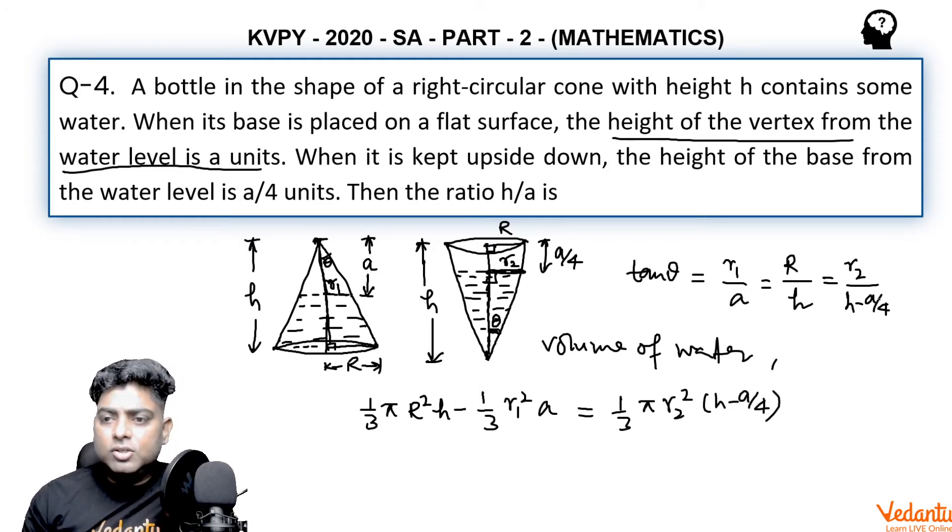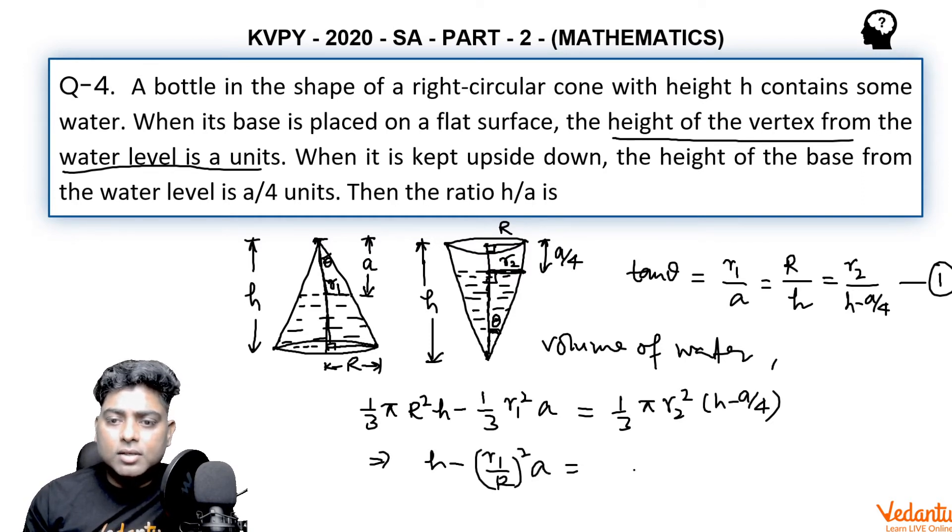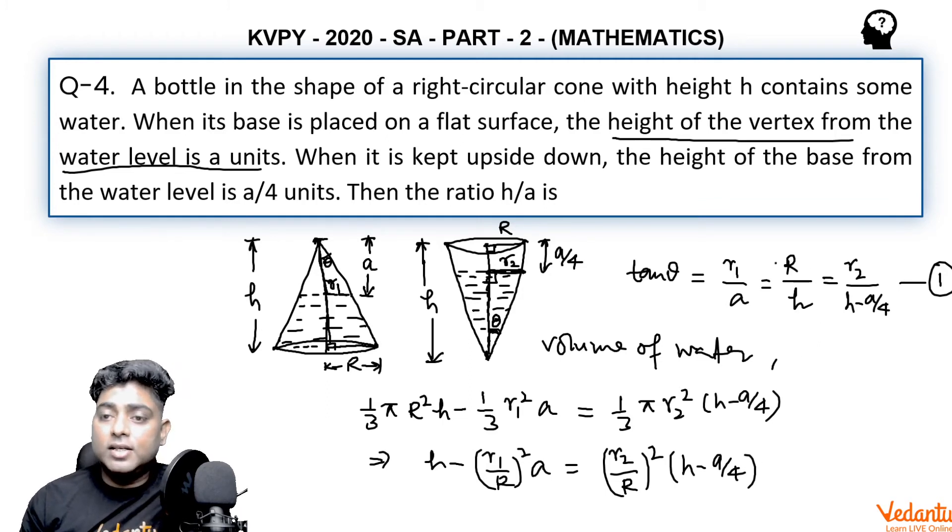Using this relation, dividing and canceling out 1 by 3 pi and dividing by capital R square, I can write h minus r1 by R whole square into a equals r2 by capital R whole square into h minus a by 4.